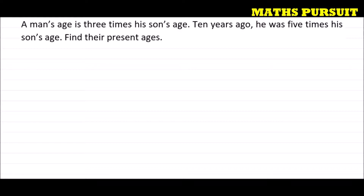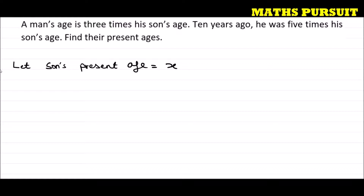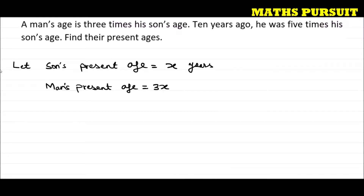The question tells us a man's age is three times his son's age. We do not know his son's age, so let us assume that the son's present age is equal to x years. Now, a man's age is three times his son's age — that means if son's present age is x years, then man's present age will be three times, that means 3x. So if son's age is x years, man's present age will be 3x years.